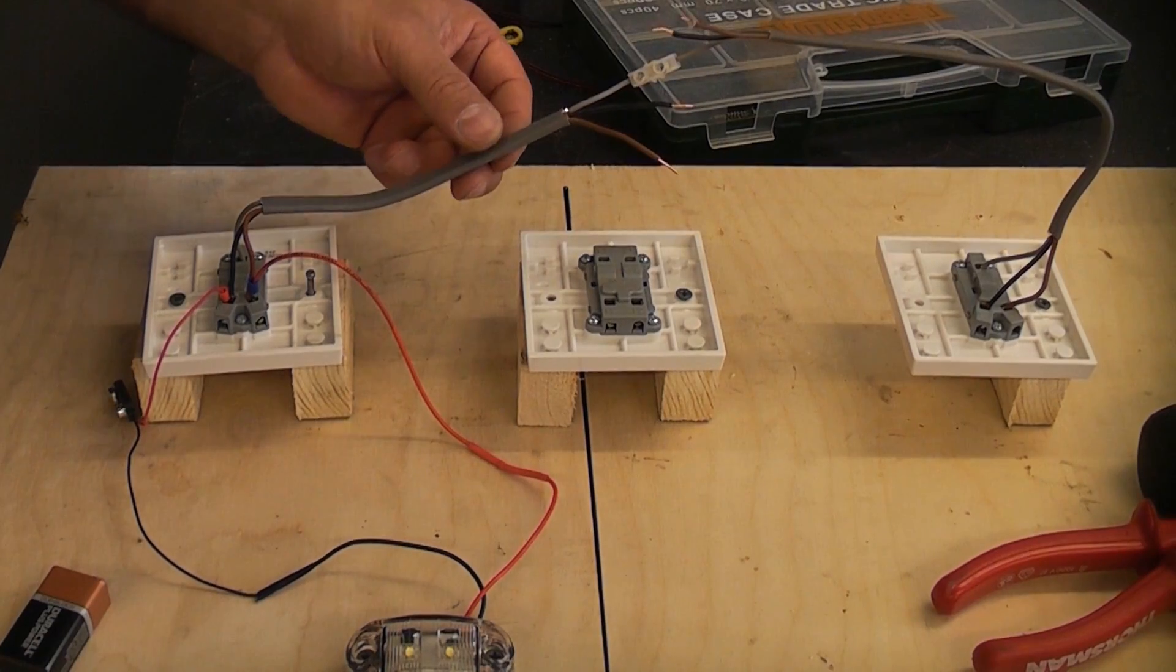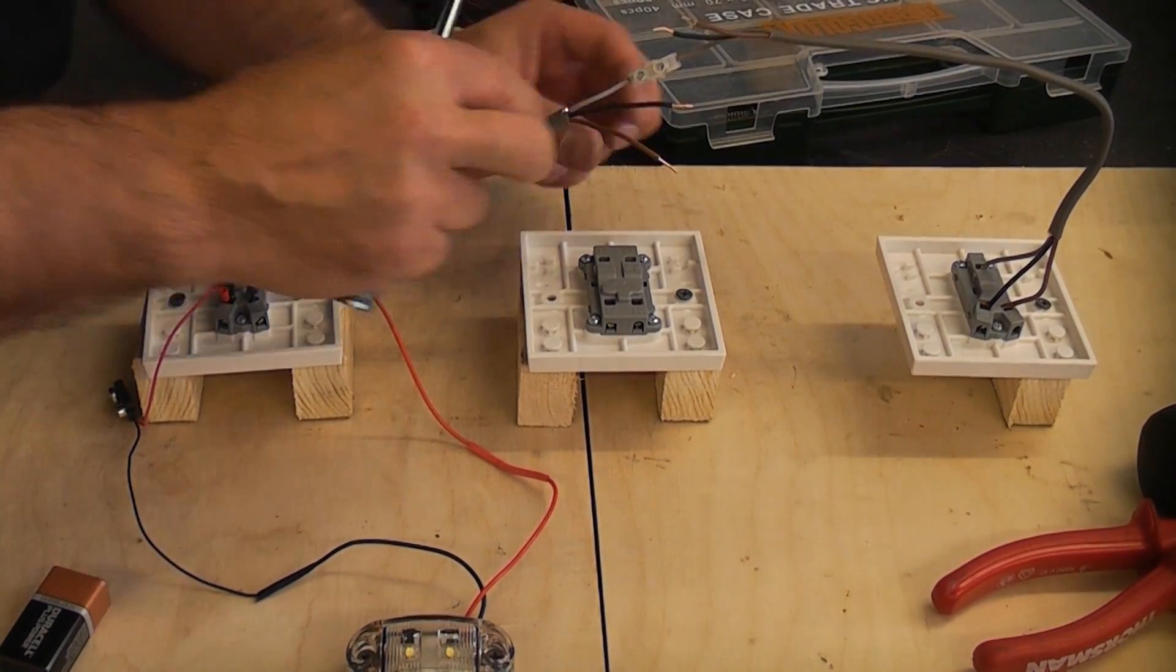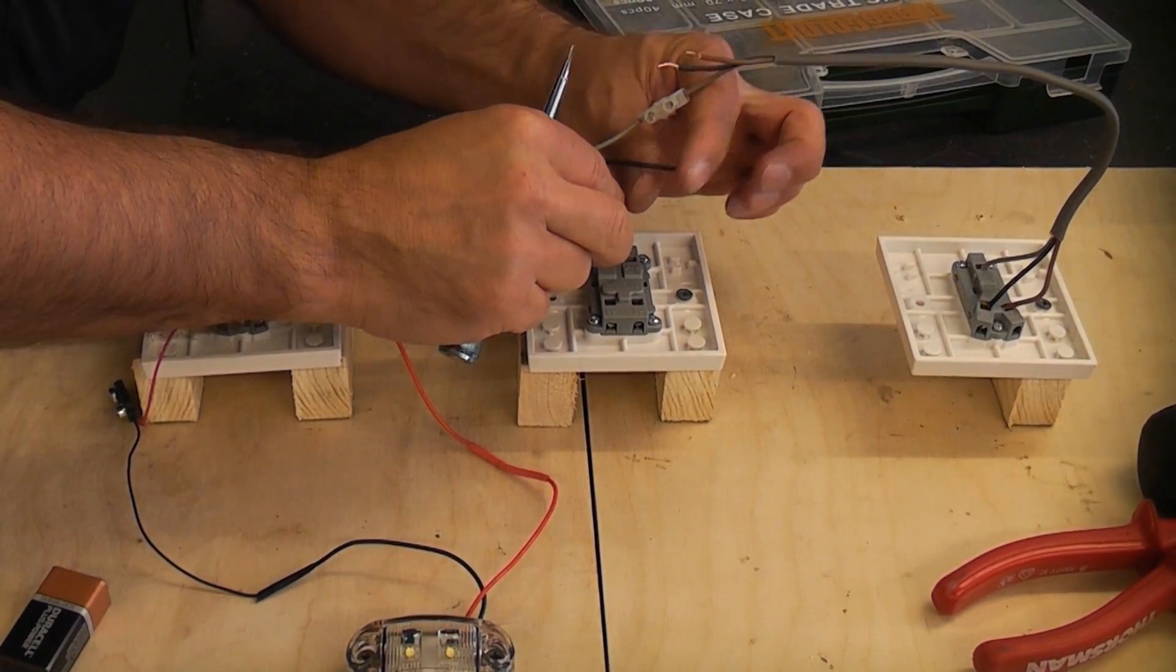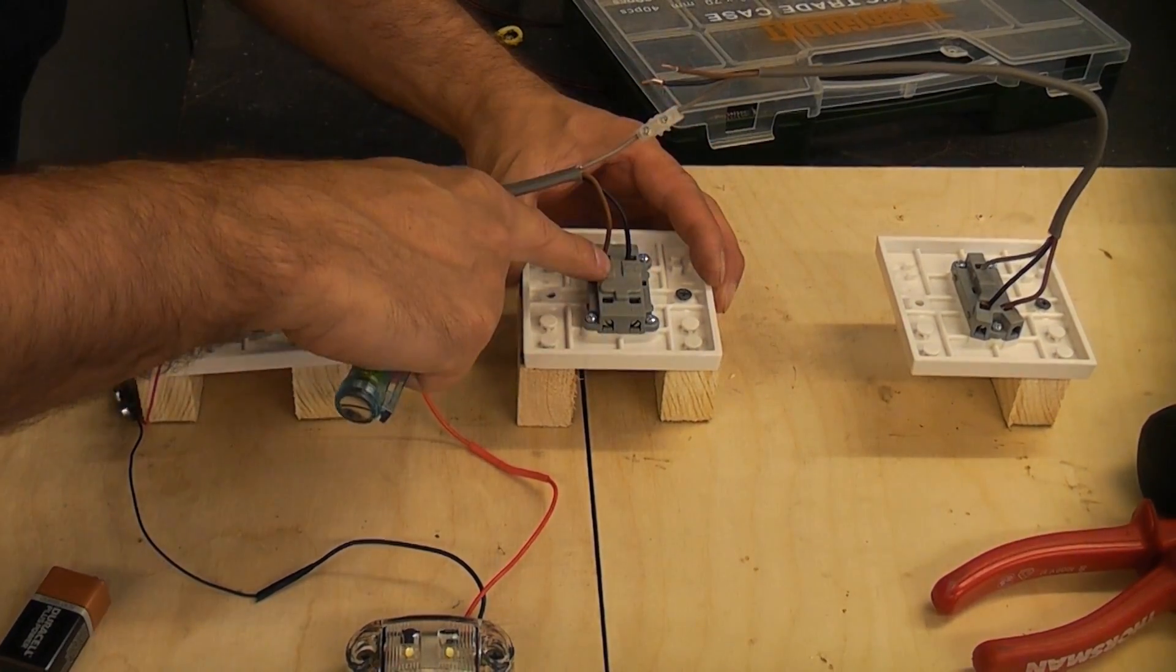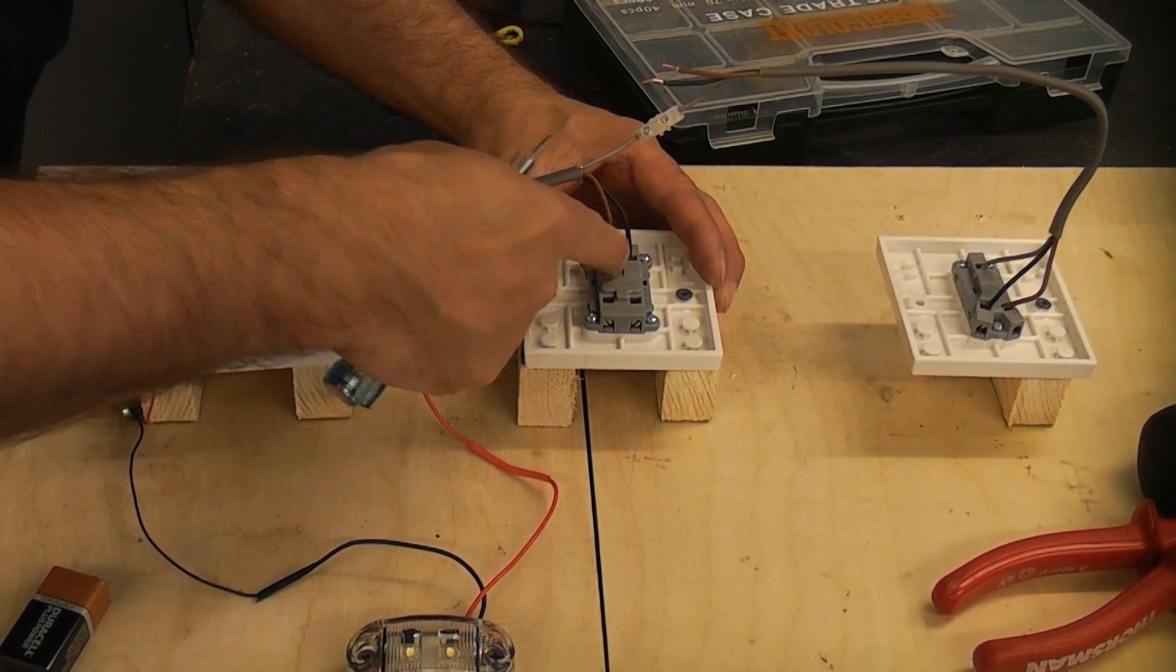We're now going to take the cable from the first switch and the two wires that are in there we're going to put into the L1 terminals. So we've got the pair of wires going into the top there which is the L1.